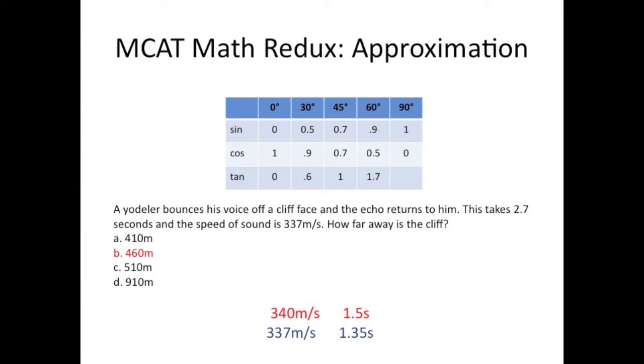And that brings us back to the trig chart. Realize that if you use .9 for sine or cosine, that the real answer will be slightly less, because the actual value is .866.